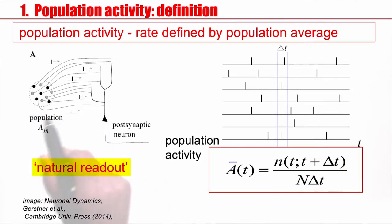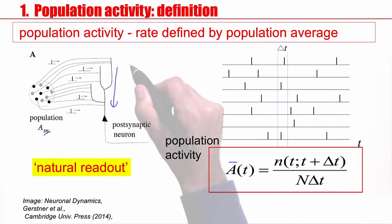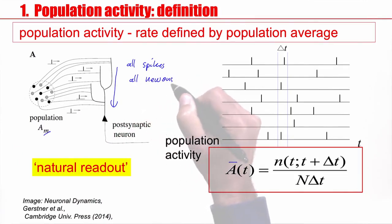So this quantity, a bar of t, averaged over the population of neurons is the population activity or population rate. And I would argue it's a very natural quantity. In the following sense, think of a neuron that receives input from that population. Say, population number m, population with index m. It receives many spikes and this neuron sits here and gets the spike input from all these different neurons. So essentially, the input to this neuron is an average over all spikes, all neurons. All those neurons that make signals, that send signals, that make connections to this receiving neuron, the neuron behind the synapse, after the synapse, the post-synaptic neuron, the receiving neuron.